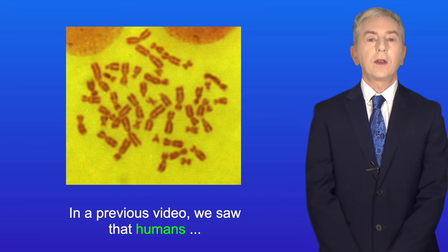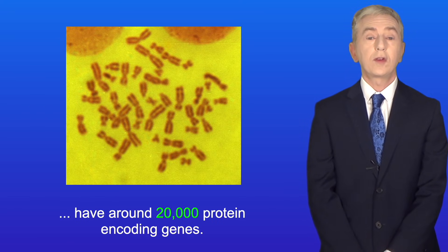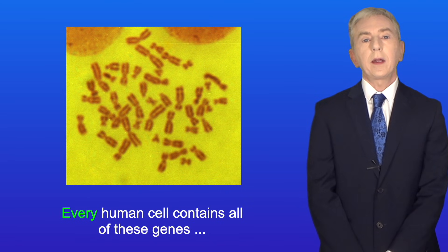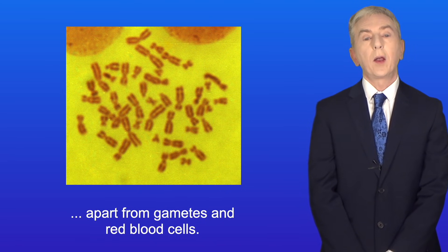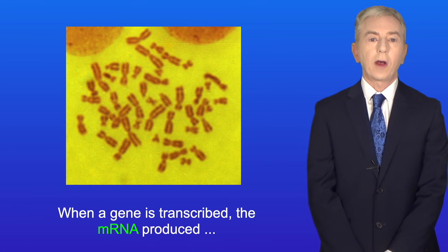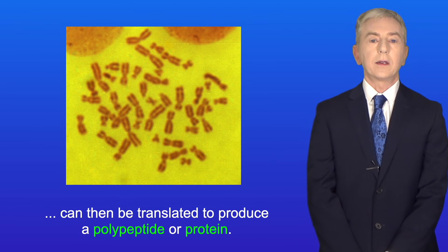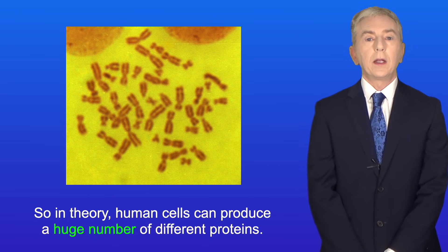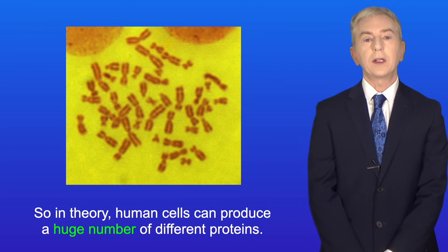In a previous video we saw that humans have around 20,000 protein encoding genes and every human cell contains all of these genes apart from gametes and red blood cells. When a gene is transcribed the mRNA produced can then be translated to produce a polypeptide or protein. So in theory human cells can produce a huge number of different proteins.